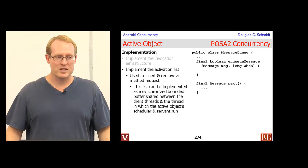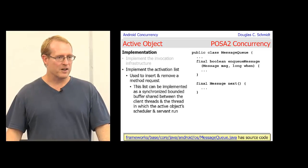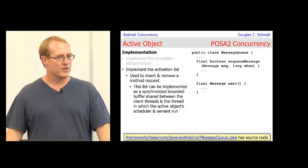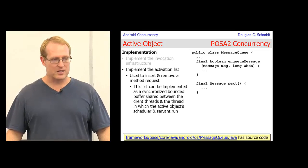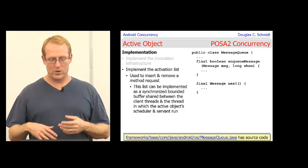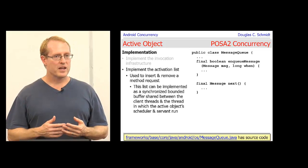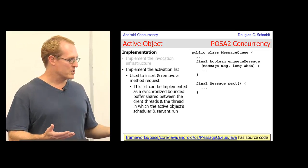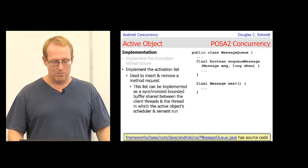In Android, the activation list would be something like the MessageQueue. The MessageQueue is defined as part of the core OS framework portion of the Android middleware, and it has methods like enqueueMessage — where you give a message and a time when you want it to run — and methods for dequeuing things like next, which will block.